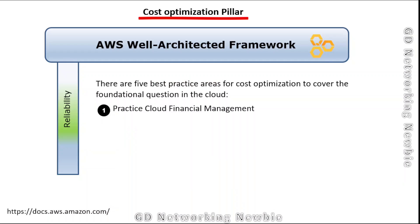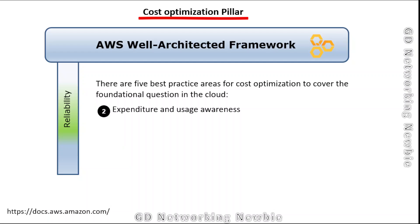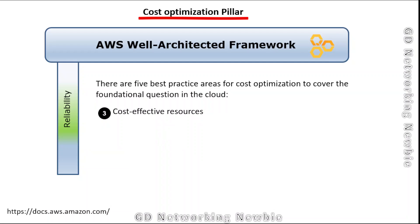The first best practice area is practice cloud financial management — how do you implement cloud financial management to optimize cost? The second is expenditure and usage awareness, which includes questions like how do you govern usage and how do you decommission resources. The third is cost-effective resources, which asks how do you evaluate cost when you select services. Further detail on these foundational questions is available in the document linked in the description.